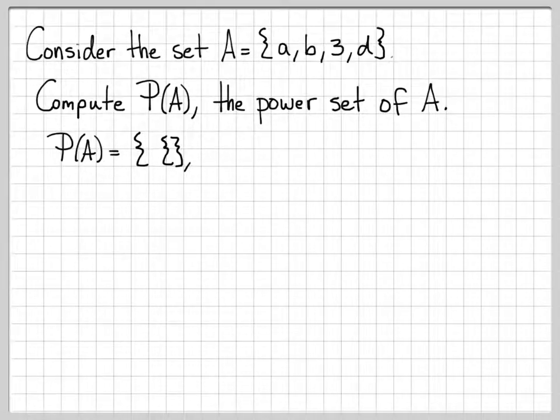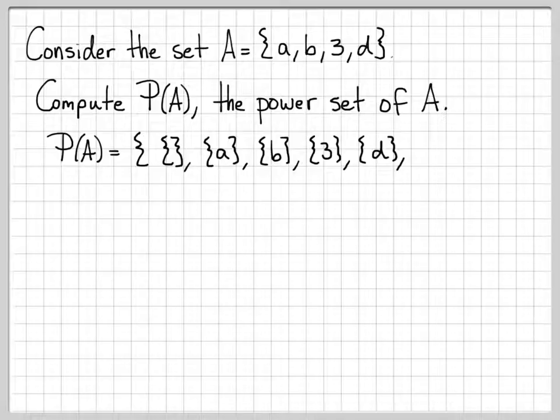And then I like to start with listing all the single element subsets of A. So individually listing a, b, 3, and d. Little a is a subset of the set A, b is a subset of A, 3 is a subset of A, and d is a subset of A. Because every element in this set is in the set A.